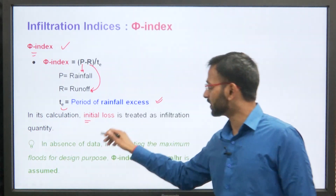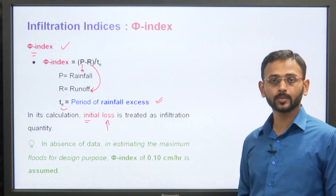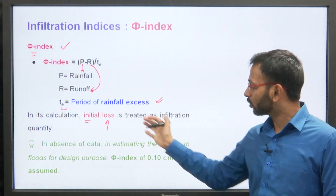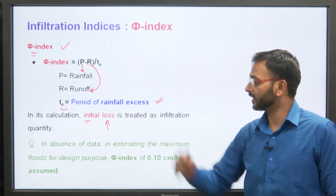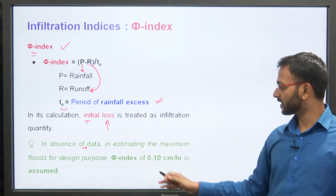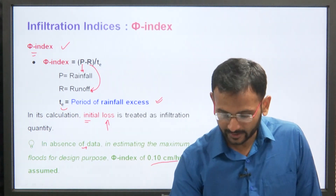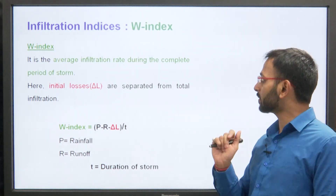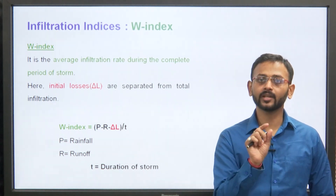Initial losses include interception losses — water obstructed and stored in ditches and sumps. In the absence of data, for estimating maximum flood for design purposes, the phi index is taken as 0.10 centimeter per hour. We have also talked about rainfall intensity and the concept of rainfall excess in the hyetograph.